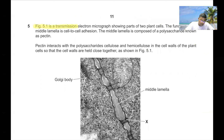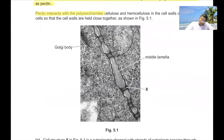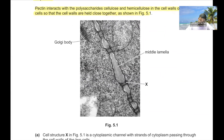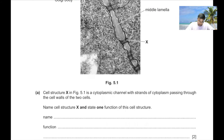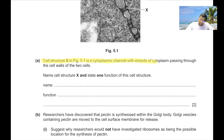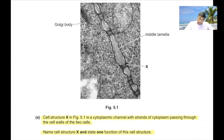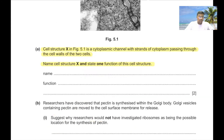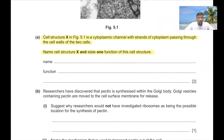Question 5. Figure 5.1 is a transmission electron micrograph of two plant cells. The middle lamella is composed of the polysaccharide pectin, which interacts with cellulose and hemicellulose in the cell walls to hold cells close together. Cell structure X is a cytoplasmic channel with strands of cytoplasm passing through the cell walls — this is the plasmodesmata. Its function is to allow symplast pathway movement, transport of water, and cell-to-cell communication.